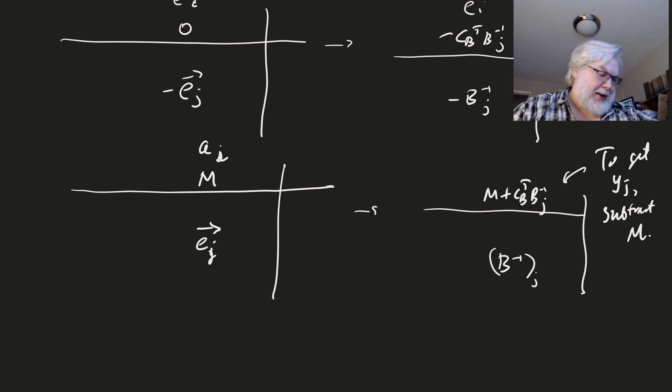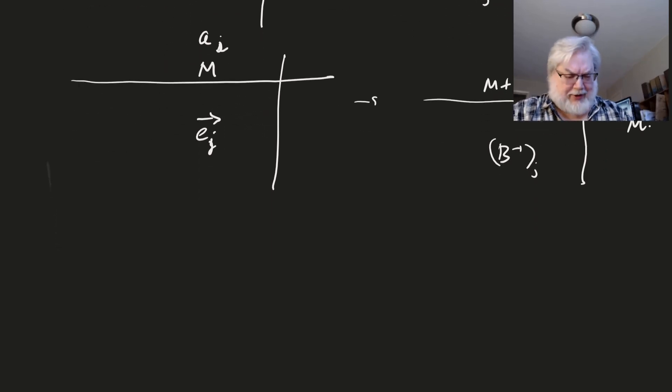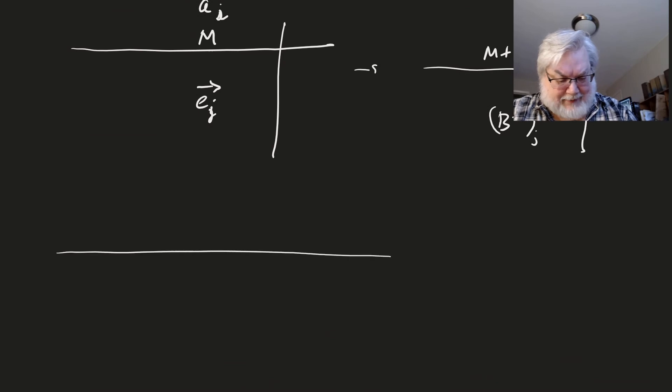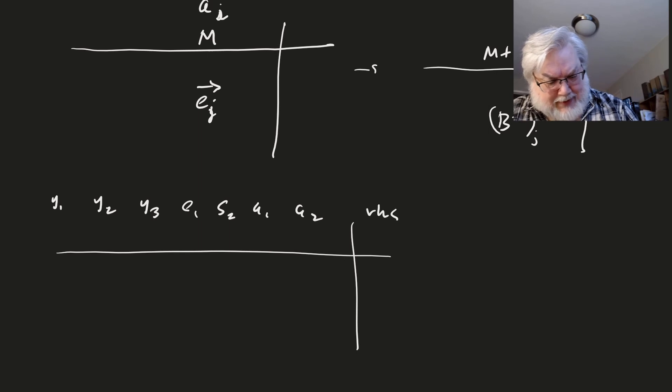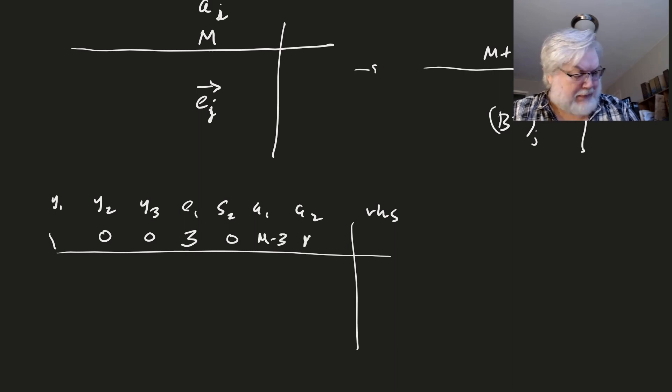Furthermore, let's talk about the table and table entry 26. And so in table 26, we have the following. We have Y1, Y2, Y3, E1, S2, A1, A2, right hand side. And so the book used a minimization problem for this, right? But remember that we're using a maximization. And so I would negate all of the row zero entries. And that would give me the following row zero. Okay.